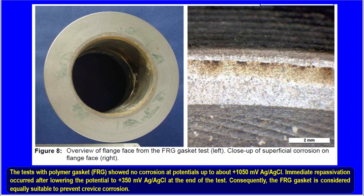This is an overview of the flange face from the FRG gasket test. The left side shows the flange face; the right side shows a close-up of superficial corrosion on the flange face. The test with the polymer gasket showed no corrosion at potentials up to about +1050 mV (Ag/AgCl electrode). Immediate repassivation occurred after lowering the potential to +350 mV Ag/AgCl at the end of the test. Consequently, the FRG gasket is considered equally suitable to prevent crevice corrosion.